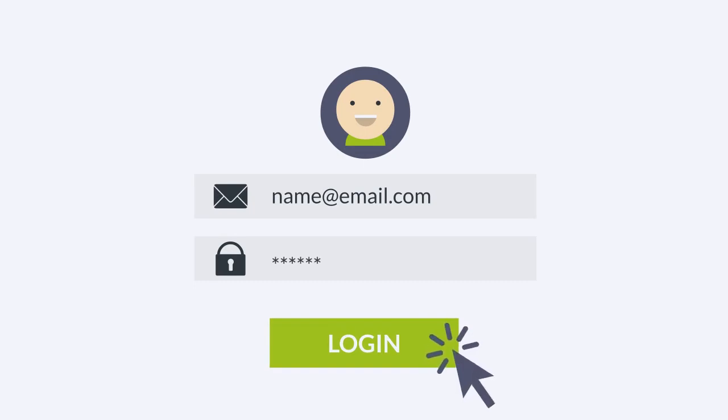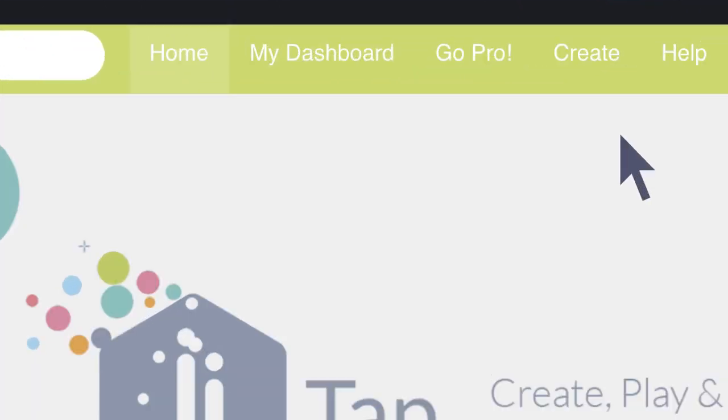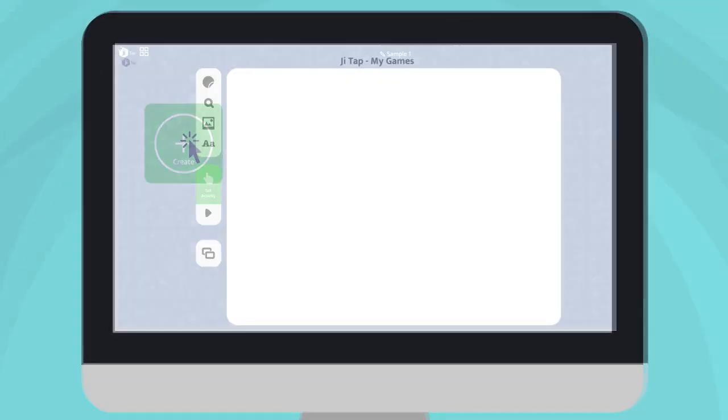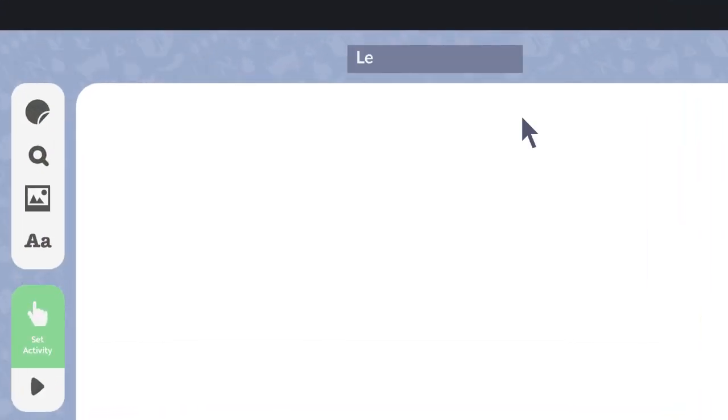Simply log into JITAP.net and click Create. Tap the plus sign to start your first game. Name your game right here at the top.